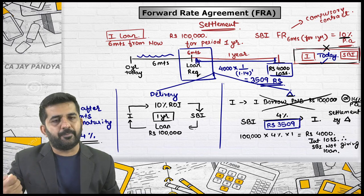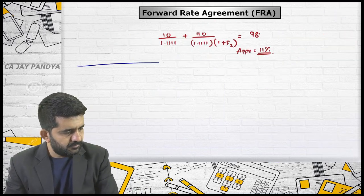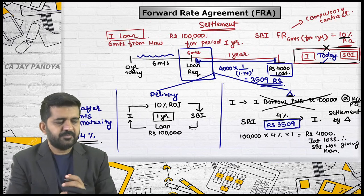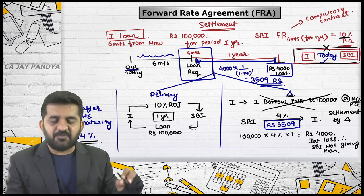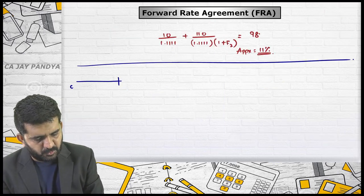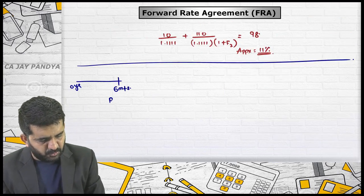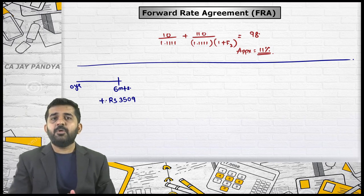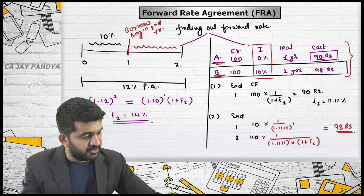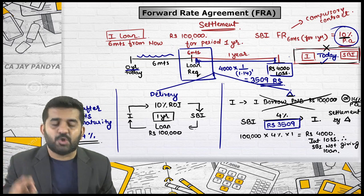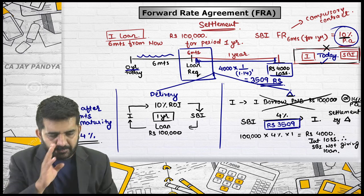Whether settlement is done by delivery or by difference, the effective cost of borrowing remains the same — 10%. This proves that forward rate agreement settlement guarantees your interest rate regardless of settlement method. The effective rate will remain 10% and will not change.